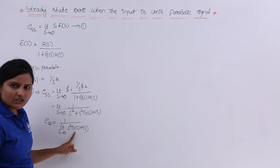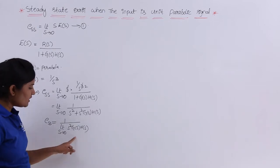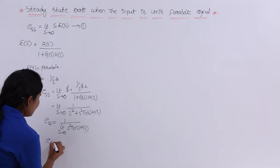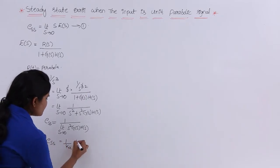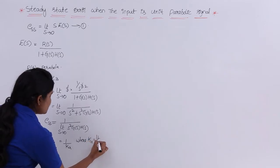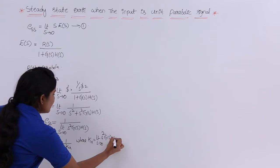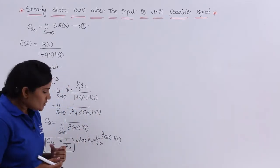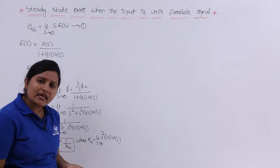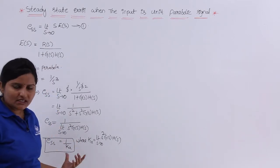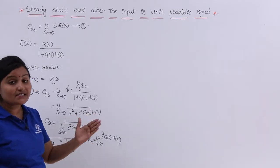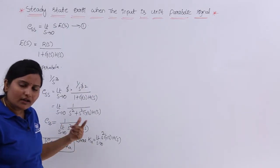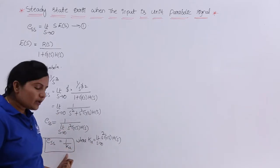Observing static error constants, this equation is equivalent to one of the static error constants called the acceleration error constant, denoted Ka. So ESS = 1/Ka, where Ka = limit s tending to 0 of s²·G(s)·H(s). The steady state error when the input is unit parabola is 1/Ka, which may be either 0, constant, or infinity depending on the type order of the system.